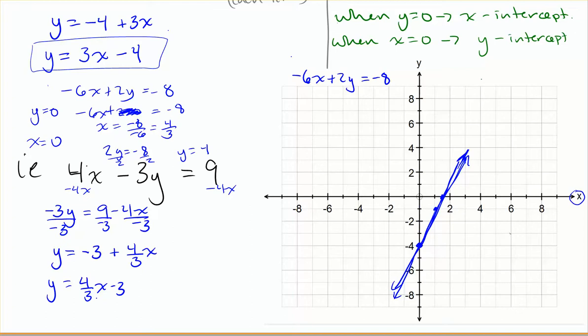And we could plot that using the y-intercept method. So I could start at negative 3, and then I could go up 4, 1, 2, 3, 4, over 3, 1, 2, 3, and plot in those lines.